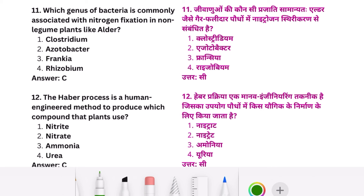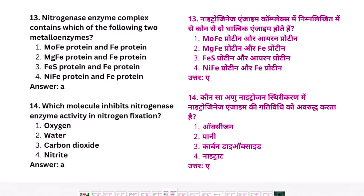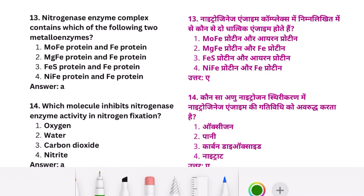The Haber process is a human-engineered method to produce which compound that plants use? The right answer is ammonia. The nitrogenase enzyme complex contains which of the following — it is a metalloenzyme. The right answer involves molybdenum-iron (MoFe) protein and Fe protein.